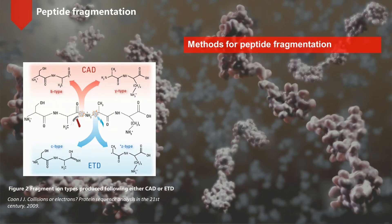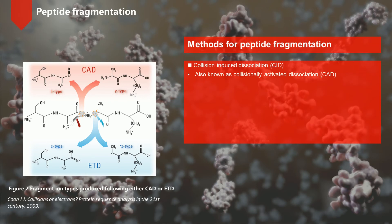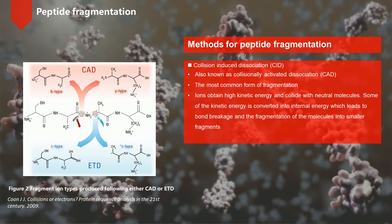De novo methods use knowledge of the fragmentation methods employed in mass spectrometry. Collision-induced dissociation, also known as collisionally activated dissociation, is the most common form of fragmentation. In this method, the ions obtain high kinetic energy and collide with neutral molecules. Some of the kinetic energy is converted into internal energy, which leads to bond breakage and the fragmentation of the molecules into smaller fragments.